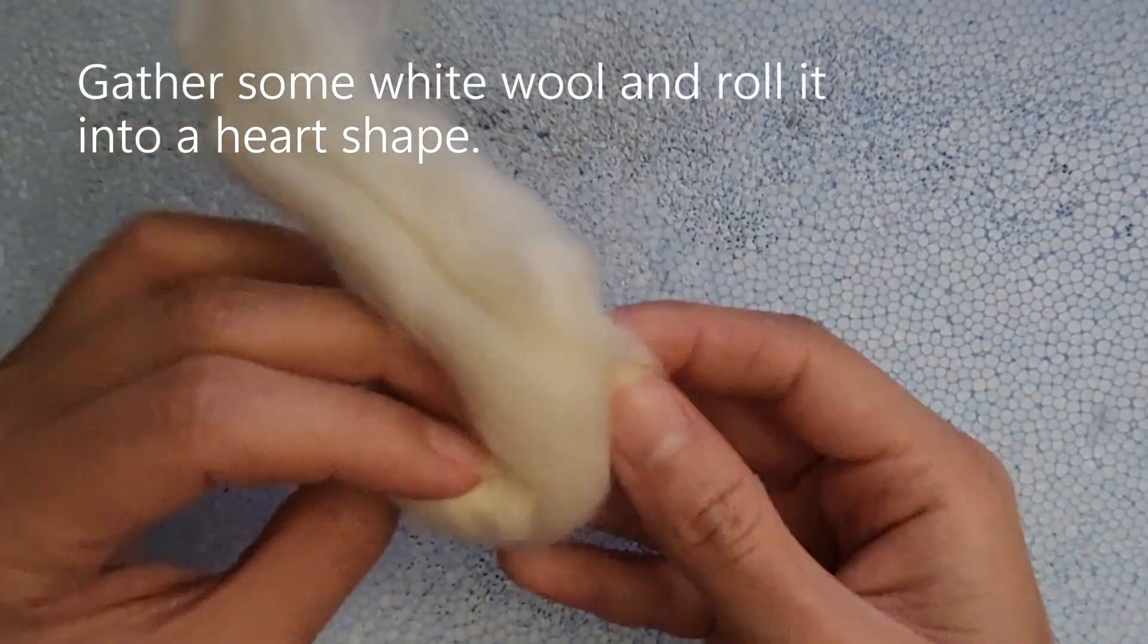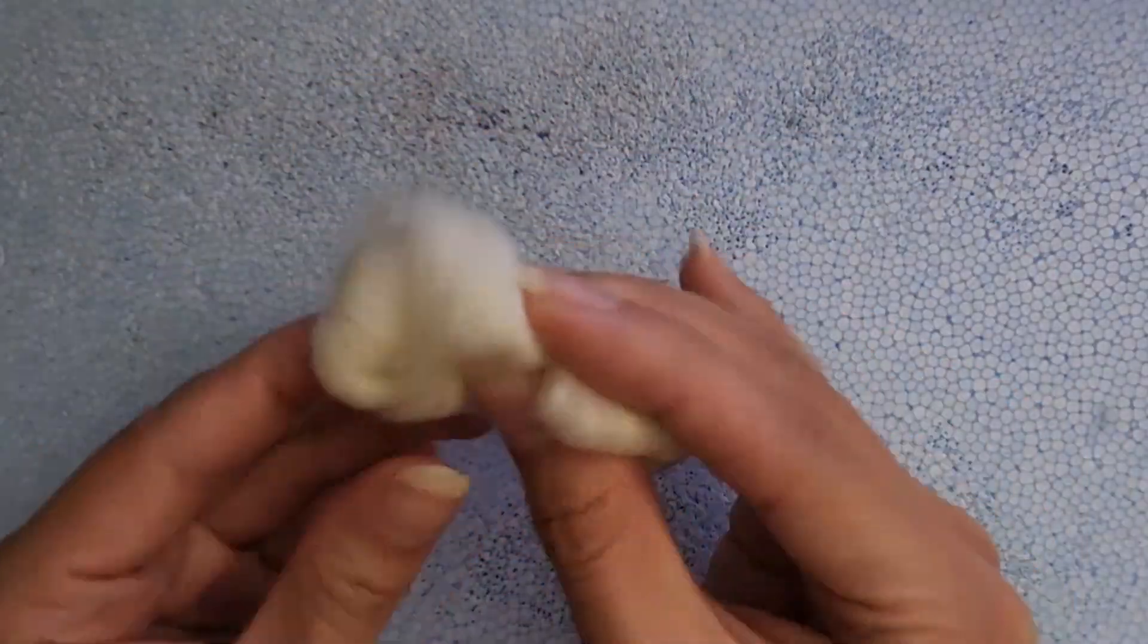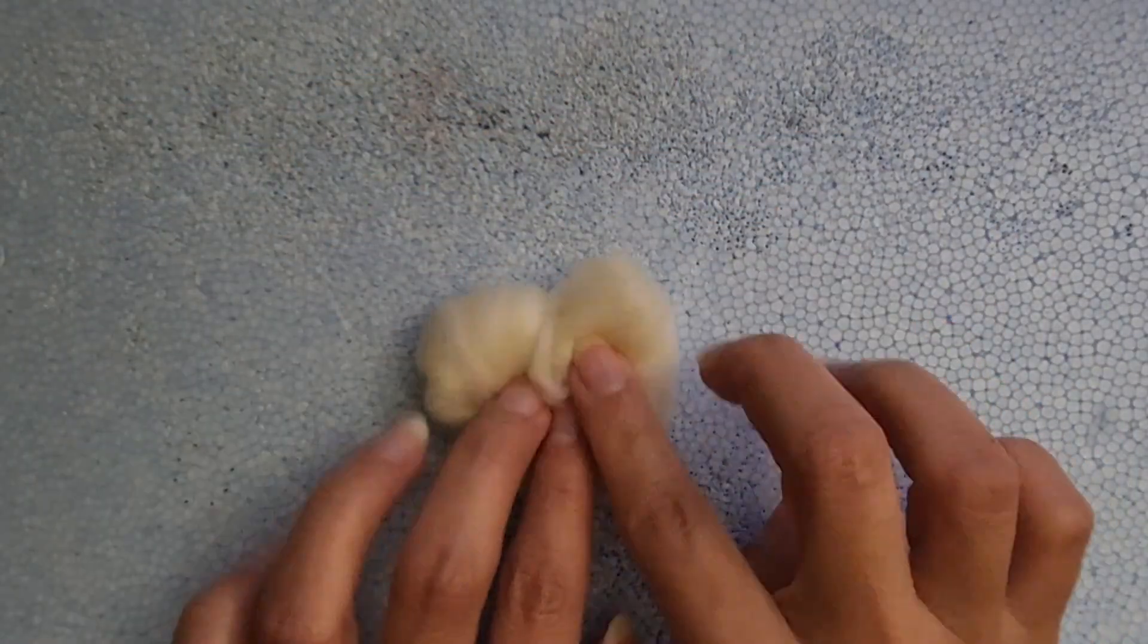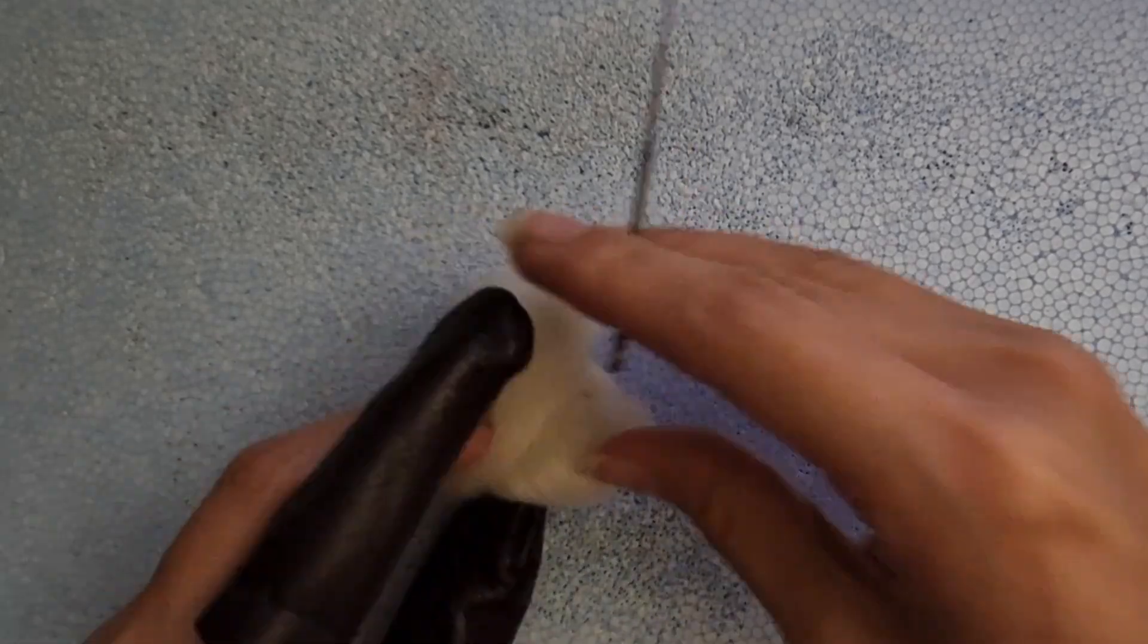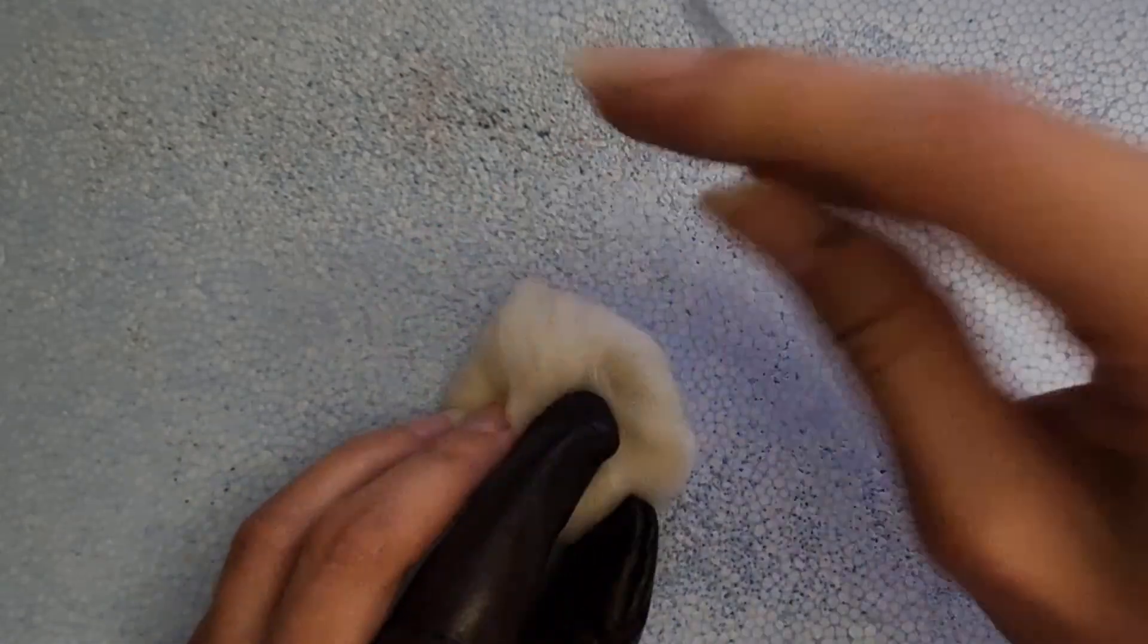First, gather some white wool and roll it into a heart shape as best as you can. You want to poke it with the felting needle to bind the wool together and make it more firm. Here, I'm just starting out with a single needle because I'm working with a smaller scale project.